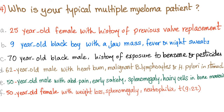Is it the 60-year-old male with heartburn, malignant B-lymphocytes, H. pylori in the stomach? Or the 50-year-old male with abdominal pain, early satiety, splenomegaly, hairy cells in the bone marrow? Or the 50-year-old female with weight loss, splenomegaly, neutrophilia? Or the 21-year-old guy living in his mom's basement?